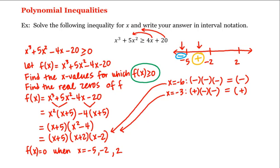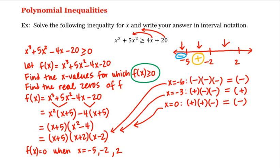For the third interval, we choose x equal to 0. Plugging this into the factored form, we get 0 plus 5, which is a positive number, times 0 plus 2, which is also a positive number, times 0 minus 2, which is a negative number. Positive times positive times negative is negative, which means f is negative in this third interval.